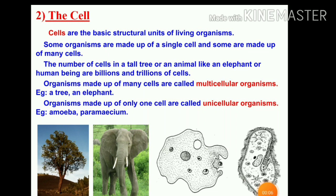If we consider the egg of a hen, it represents a single cell and is big enough to be seen by the unaided eye. Some organisms are made of a single cell and some are made with many cells. The number of cells in a tall tree or an animal like an elephant or human being runs into billions or trillions. Organisms made with many cells are called multicellular organisms — for example, trees and elephants.